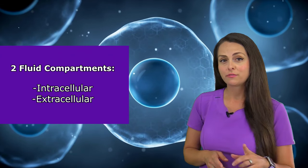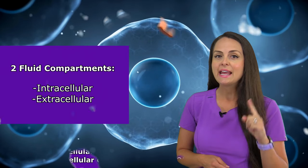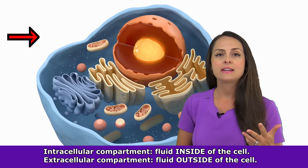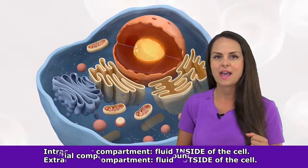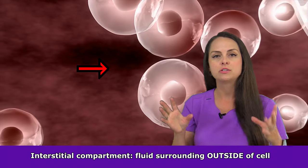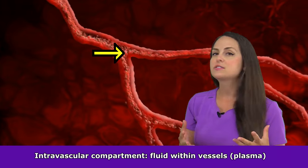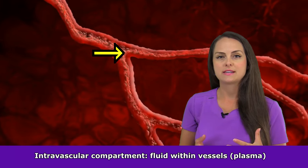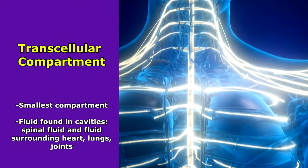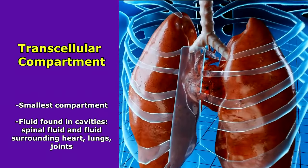Let's quickly review the fluid compartments. We have two: intracellular, which is the inside of the cell, and extracellular, the outside of the cell. Extracellular can be subdivided into three: the interstitial compartment (fluid surrounding the cells), the intravascular compartment (fluid inside our vessels, also called plasma), and the transcellular compartment — the smallest — which is fluid found within certain organs and joints like the heart and lungs.